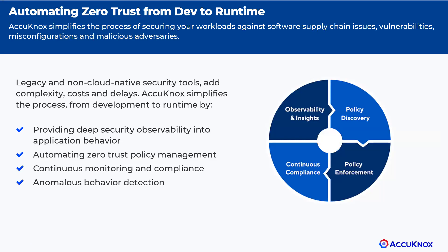A zero-trust CNAPP addresses the entire life cycle from development to runtime. As they say, you cannot secure what you don't see, so it all starts with accurate observability or visibility. Based on the telemetry, zero-trust policies are generated, which then are enforced. One of the key tenets of zero trust is continuous observation, and hence CNAPP requires an anomaly detection solution to ensure continuous compliance.